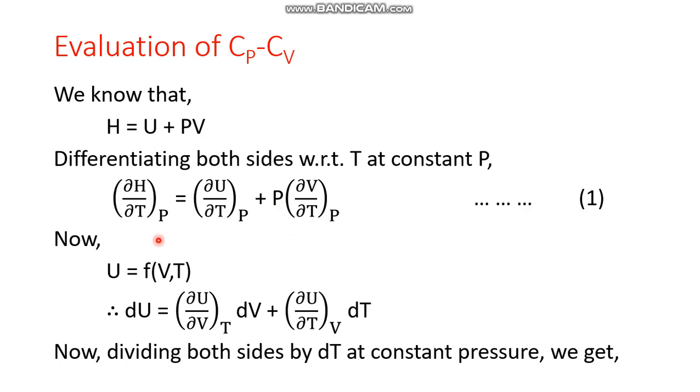Now U is a state function, and it is definitely a function of temperature, volume, and pressure. So let us select volume and temperature and apply the slope rule here. What should be the expression of dU according to the slope rule? It is del U by del V at constant T times dV, plus del U by del T at constant V times dT.